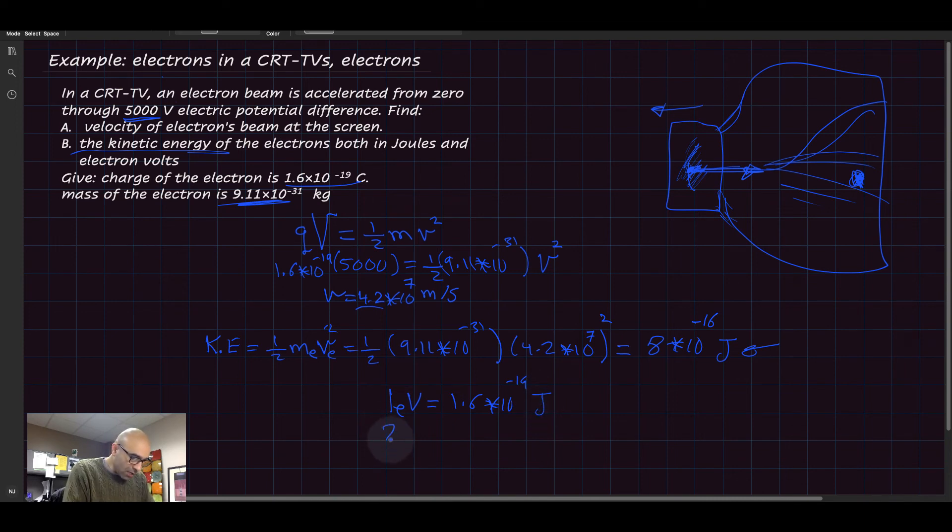Now, how many electron volts is our 8 times 10 to the minus 16 joules? Basically, you want to do a type of unit conversion. You multiply this number by that number and divide by this number, and you will end up canceling units and ending up with electron volts. You'll find this equals 5000 electron volts.